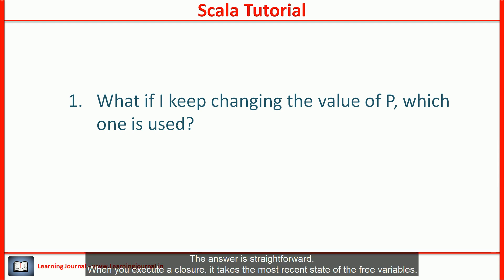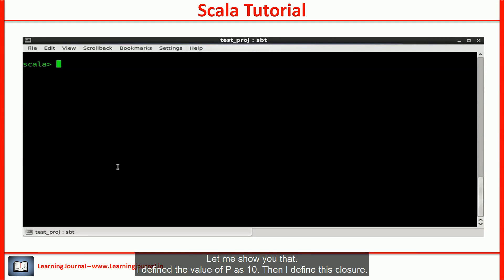The answer is straightforward. When you execute a closure, it takes the most recent state of the free variables. Let me show you that. I defined the value of p as 10. Then, I defined this closure.